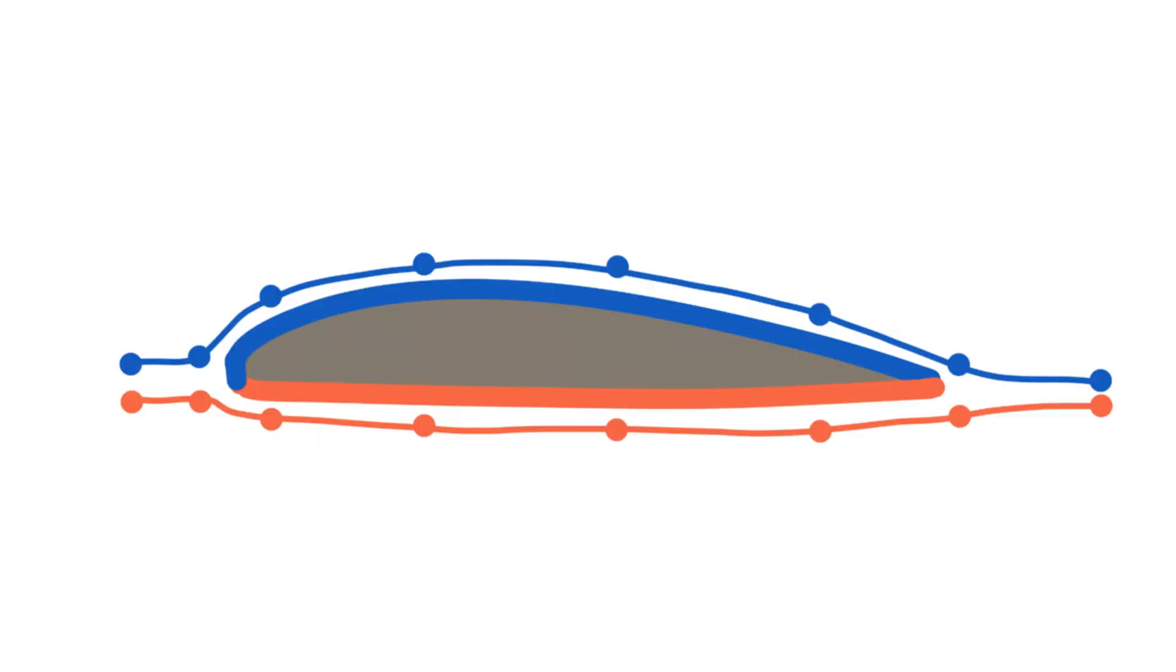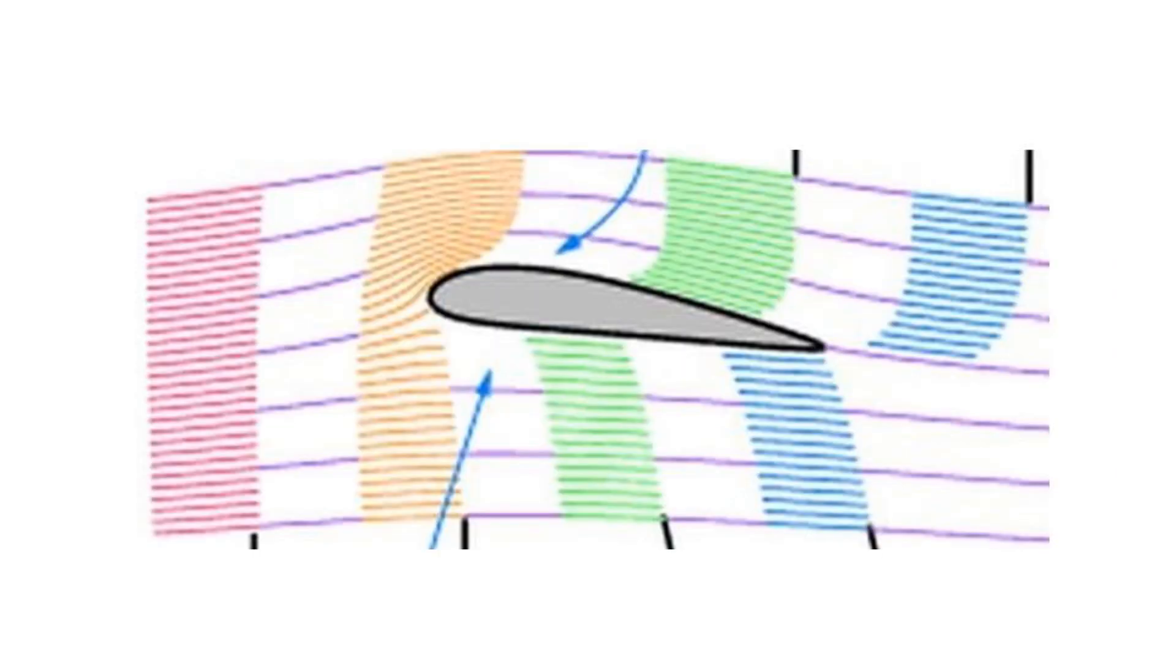However, this explanation incorrectly assumes that the top and bottom air molecules must take the same amount of time to traverse the wing, but this is not the case. In fact, air traveling over the wing usually needs less time to traverse it than air traveling along the bottom.